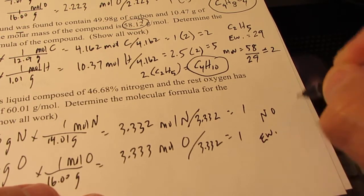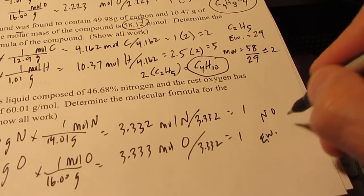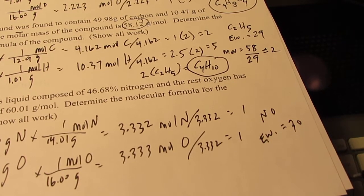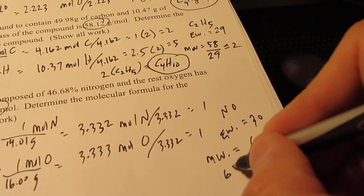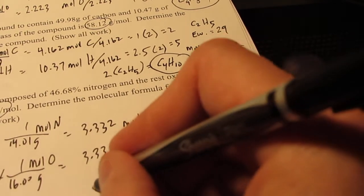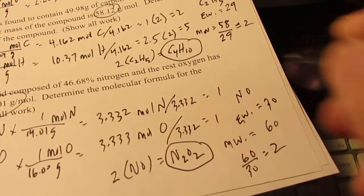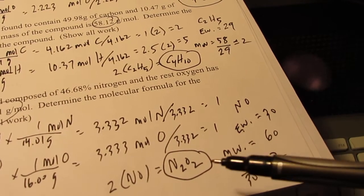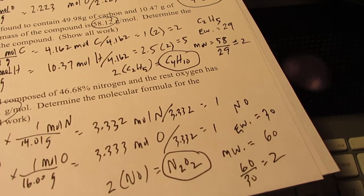Now the empirical weight of that would be the weight of a nitrogen plus an oxygen. Nitrogen is about 14, oxygen is about 16, so that gives us an empirical weight of 30. The molecular weight is 60, which as you can see is twice as big again. So we don't need 1N and 1O, we need 2 times as many N's and O's, which would be N2O2. So that's our molecular formula. Remember, molecular formula is the actual ratio. Empirical formula is the lowest whole number ratio.